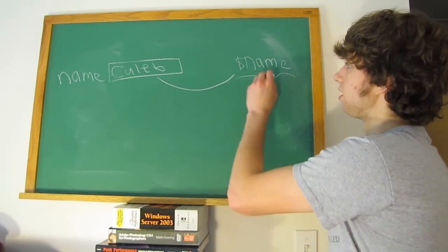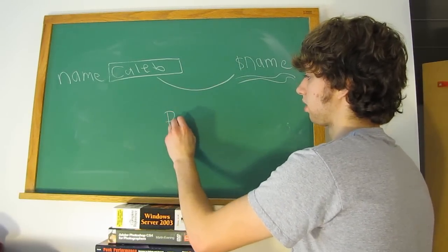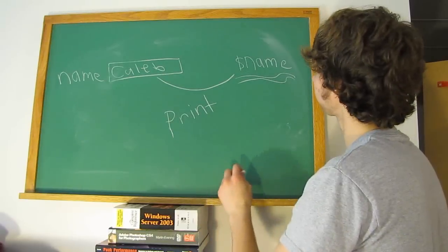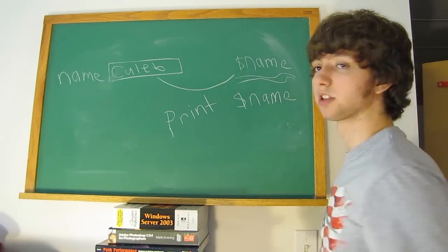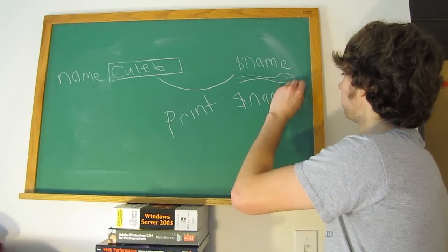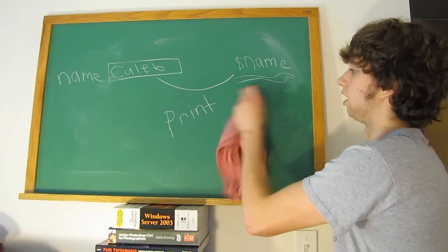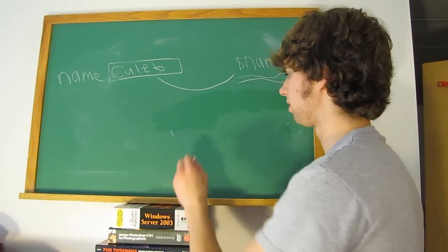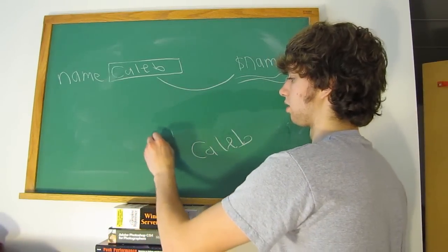We can store this in the variable name. And then we can do something such as print name. So what this is going to do, I'm not using exact syntax, as it should have a semicolon at the end. But that is going to print out Caleb.